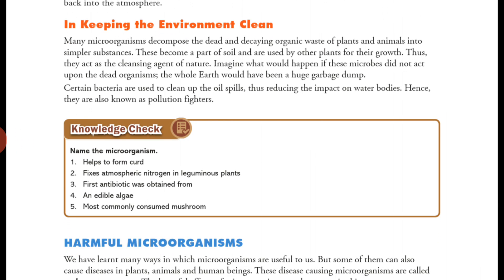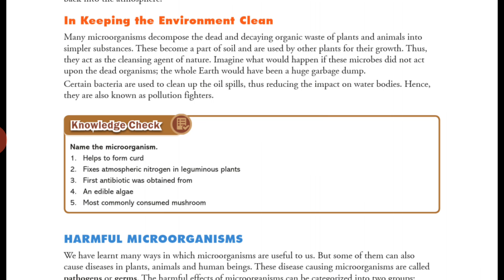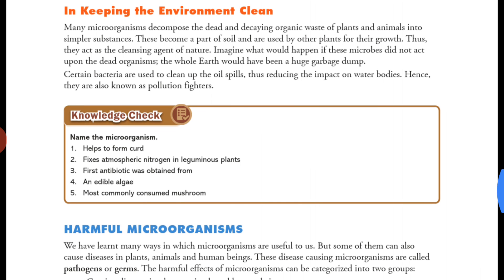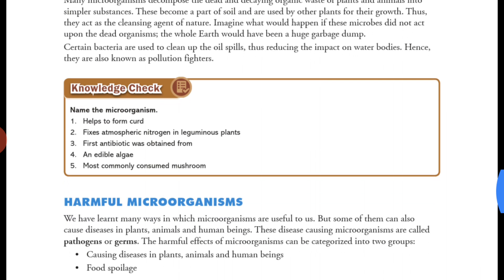Certain microorganisms are also used to clean up oil spills, thus reducing the impact on water bodies. Large ships carrying oil sometimes leak oil into seas and oceans, which can kill aquatic plants and animals. However, certain bacteria present in seas and oceans can clean up this oil and protect water bodies. Hence these microorganisms are also known as pollution fighters, because they protect both the earth and the plants and animals living in water bodies.